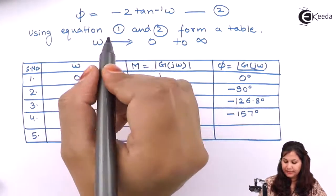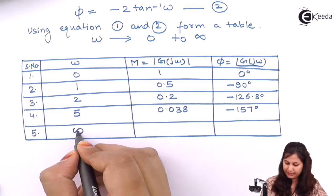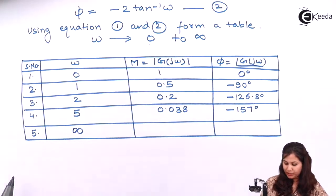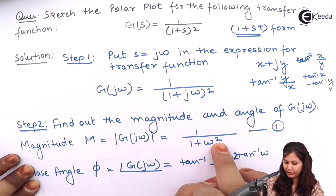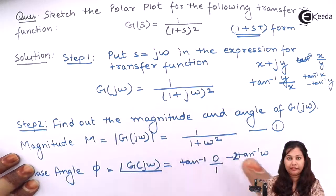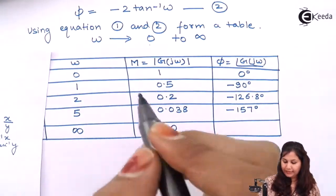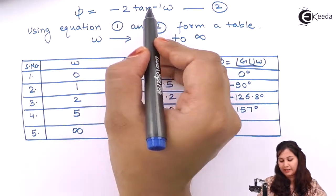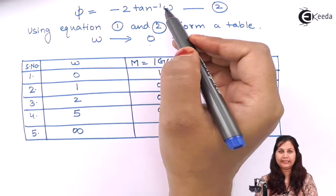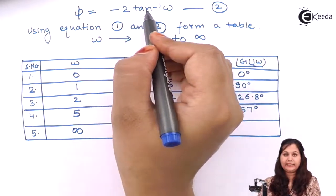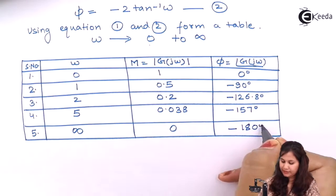Now since ω varies from 0 to infinity, the last value we take is infinity. Putting ω = ∞ in the magnitude gives 1 / (1 + ∞) = 1/∞, so the magnitude is 0. For the phase angle, −2·tan⁻¹(∞): tan⁻¹(∞) is 90 degrees, so 2 × 90 = 180 degrees, giving −180 degrees.